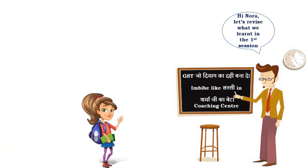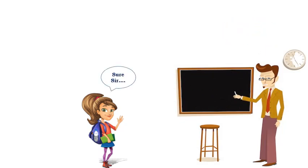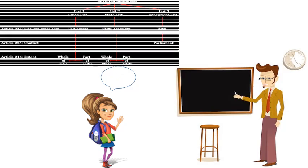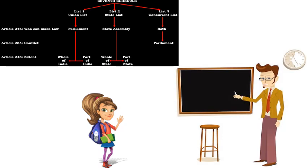Hi sir. Hey Nora, let's revise what we learnt in the first session. In the previous session, we learnt the 7th Schedule under Article 246 of the Constitution of India deals with the division of power to make laws between the Union and the States. The 7th Schedule classifies the power into three lists: Union List, State List, and Concurrent List. Union List is the list on which Parliament has exclusive power to make laws. State List is the list on which the State Assemblies have exclusive power to make laws. Concurrent List is the list on which both can make laws.